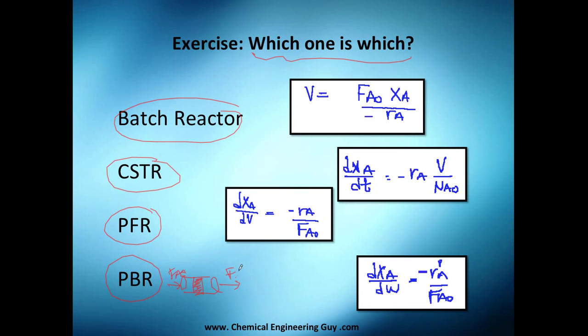PFR is very similar: F_A0, you have no packing, and you have an outlet. Then you got this continuous stirred tank: you have inlet and outlet. And the batch, you just got these moles. That's why we use only moles, not flows, in batch reactor.